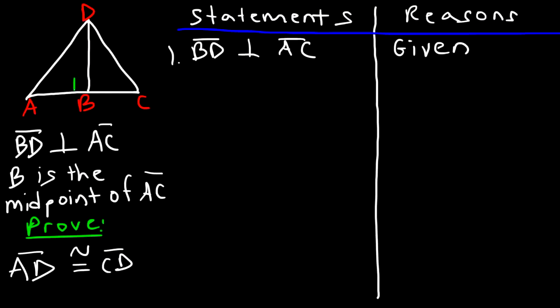Perpendicular lines form right angles. So that means angle ABD is a right angle, and angle CBD is a right angle. We can make another statement: angle ABD is congruent to angle CBD. The reason for that is perpendicular lines form right angles.